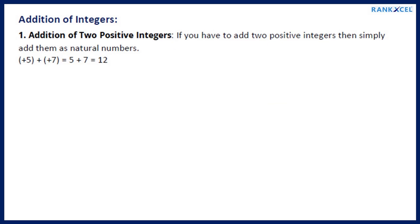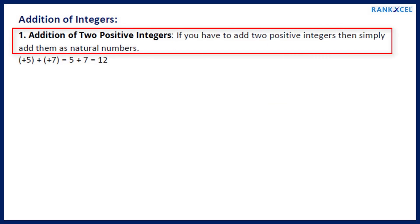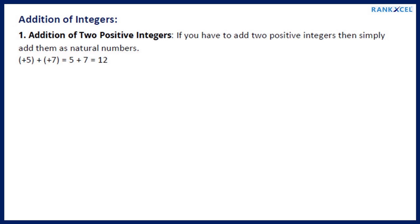Addition of integers. Rule 1 — Addition of 2 positive integers: If you have to add 2 positive integers, then simply add them as natural numbers. Example: plus 5 plus plus 7 equals 5 plus 7 equals 12.